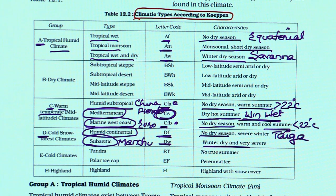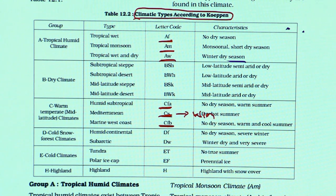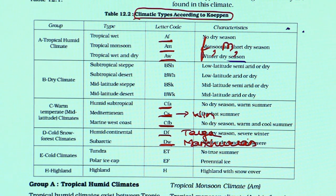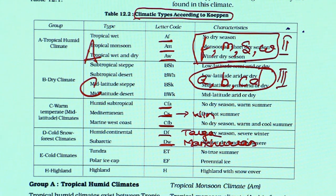To quickly repeat: AF is equatorial, AM is monsoonal, AW is savanna. CFA is China or Florida type, CFB is European type, CS is Mediterranean with dry summers and onshore westerlies only during winter — so winter precipitation and dry summers. DF is taiga type, DW is Manchurian type. Lowercase f, m, s, w are second-level symbols; lowercase a, b, c, d are third-level symbols used with A, C, and D.